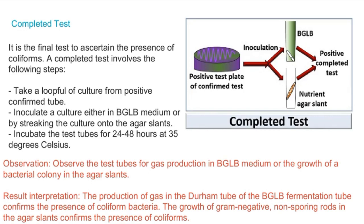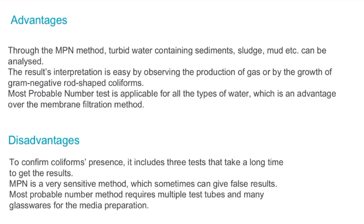This is the MPN test. The advantages of the MPN method are: it can be used for turbid water like sediments and sludge; the result interpretation is very easy based on gas production, color changes, and bacterial form; and it is applicable to all types of water. Compared to the membrane filtration method, it is easier to use.